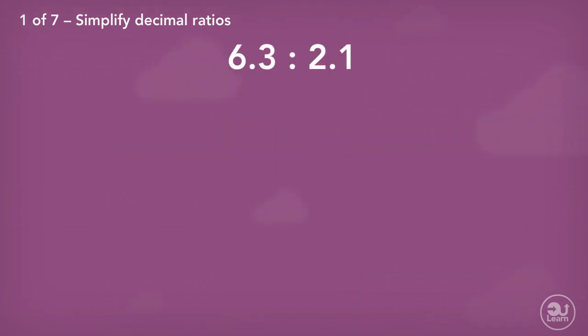Last example: simplify the ratio 6.3 to 2.1. Going through the same process, multiply both values by a multiple of 10. In this case, we can use 10, giving us the ratio 63 to 21, making both values whole numbers.